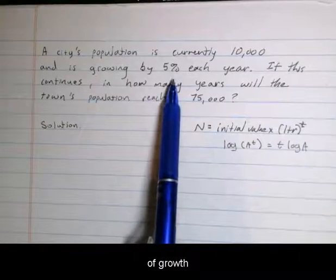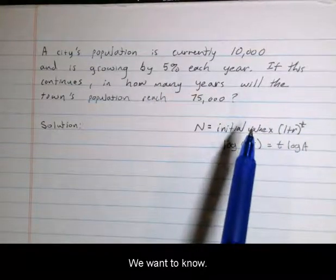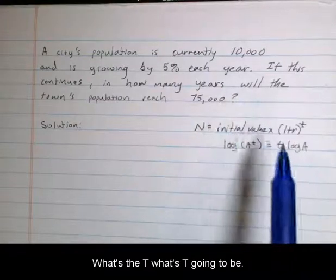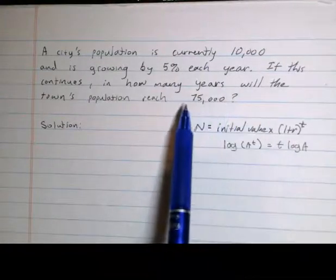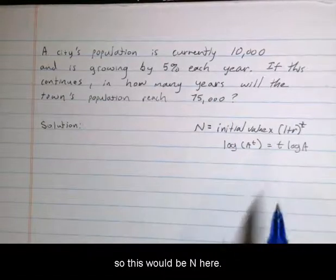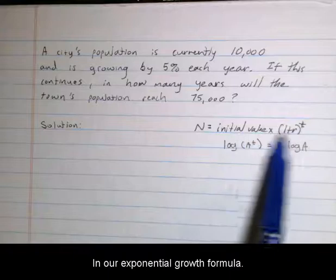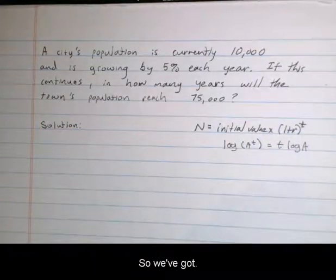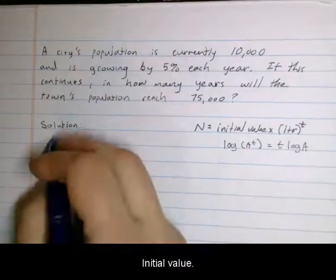We want to know what t is going to be when the population reaches this amount. This would be in our exponential growth formula, where we've got the initial value.